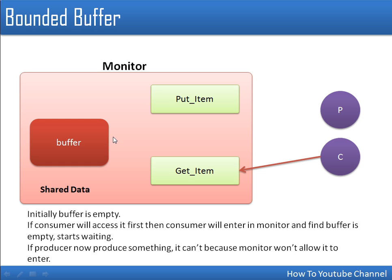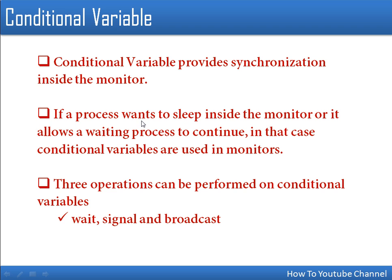Conditional variables are the reasons for which a process is going to wait. In the bounded buffer, a consumer will wait if the buffer is empty, but a producer will wait if the buffer is full. So if a process is waiting for some reason, that reason is modeled as a conditional variable. Conditional variables provide synchronization inside the monitor — outside the monitor, the lock provides mutual exclusion, but inside the monitor, conditional variables are used when a process wants to wait.